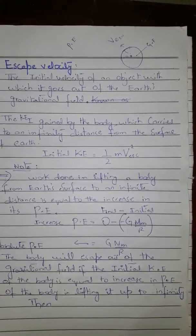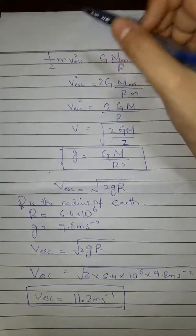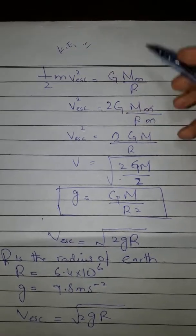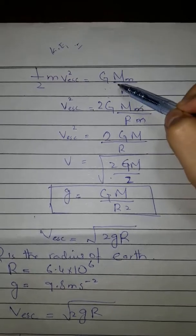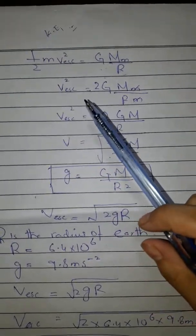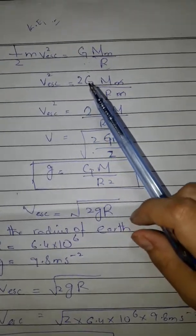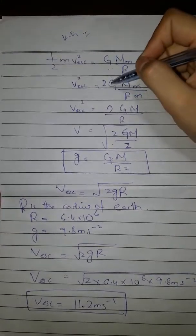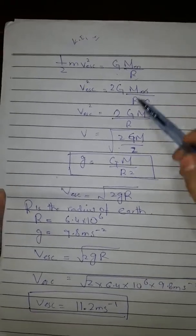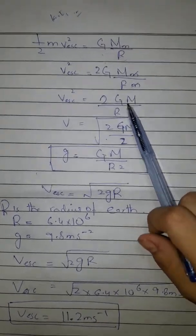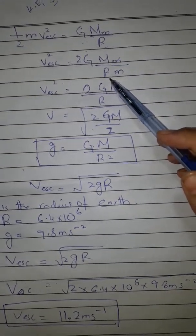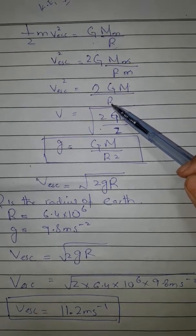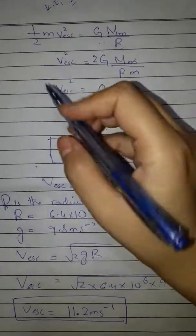When the kinetic energy equals the increase in potential energy, the body is able to lift itself to infinity. So setting initial kinetic energy equal to increase in potential energy: one-half m·v_esc² = GMm/R. Arranging this equation: v_esc² = 2GMm/R. The m's cancel with each other, leaving v_esc² = 2GM/R, where G is the gravitational constant, M is the mass of the earth, and R is the radius of the earth.